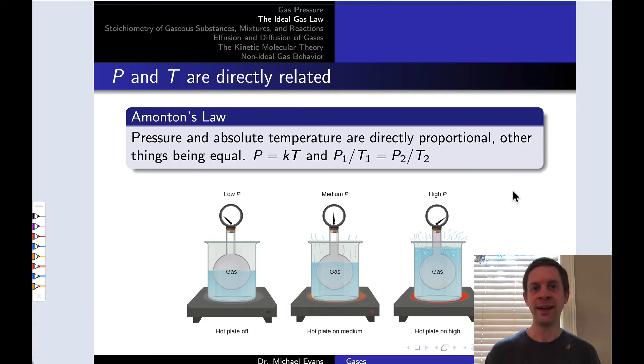In this video, we're going to start digging into relationships between variables related to gases, the so-called empirical gas laws. What we're going to do is look at each pair of variables, assuming all of the other variables are held constant through the experimental setup, allowing us to isolate the relationship between the two variables in question. We're going to start by looking at pressure and temperature.